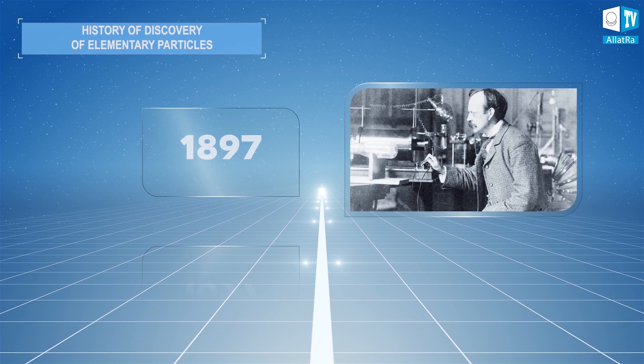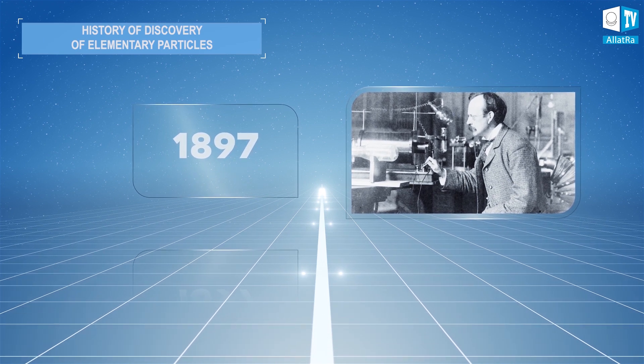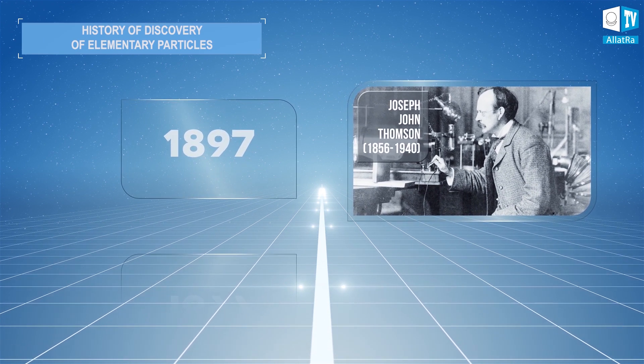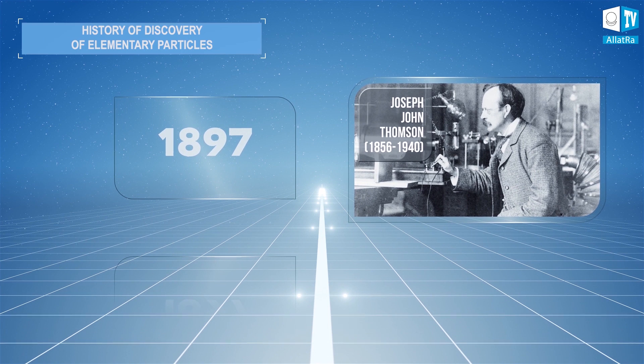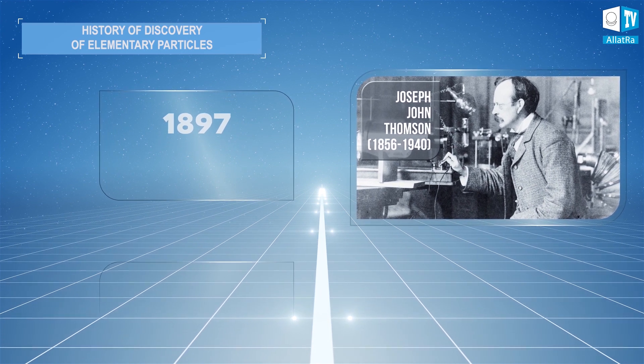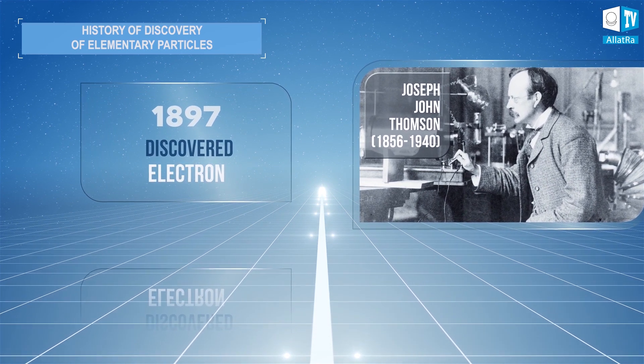In 1897, thanks to English physicist Joseph John Thomson, who established that cathode rays are formed by a stream of the smallest particles, an electron was discovered.